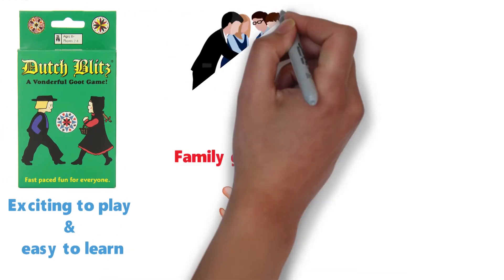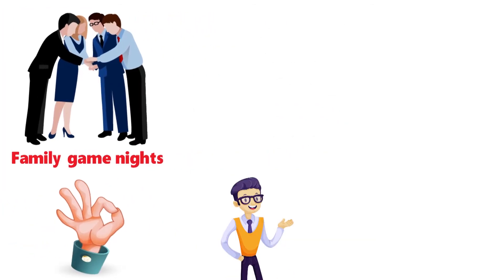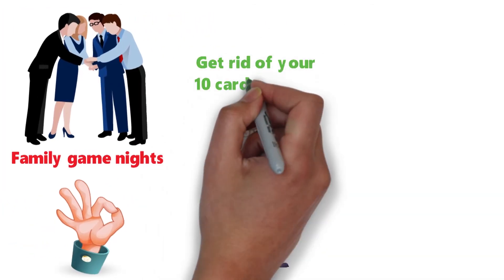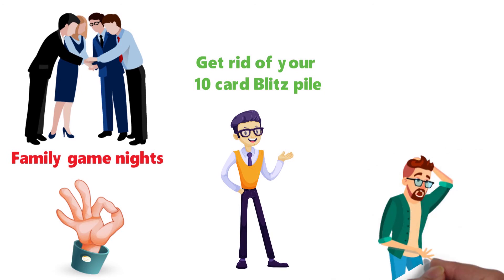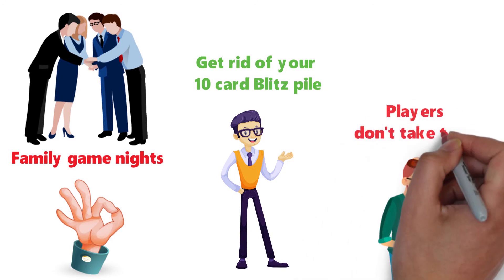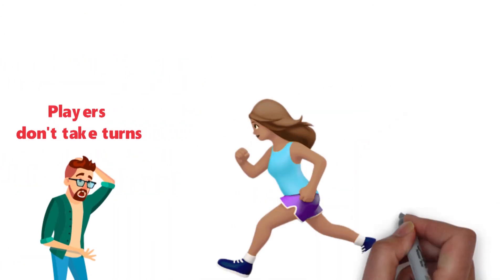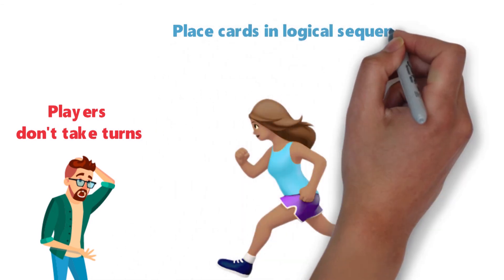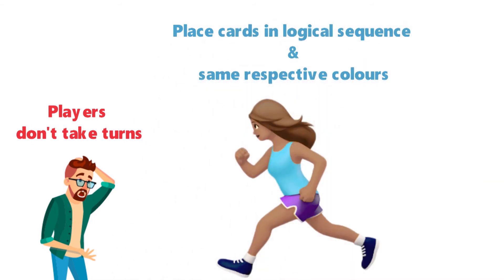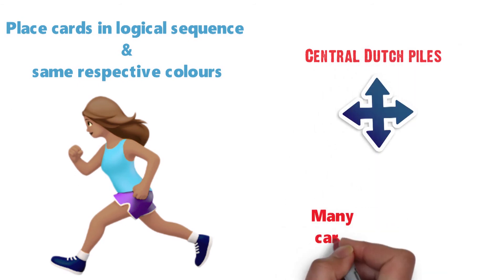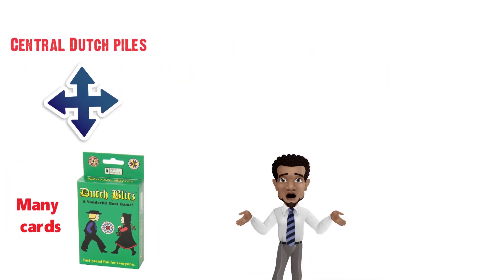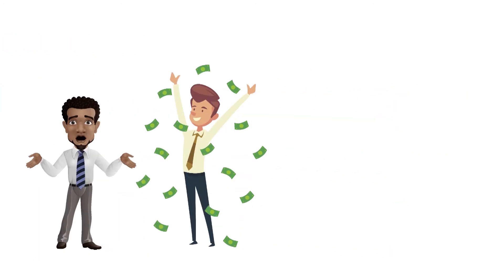The goal is to get rid of your 10-card blitz pile before anybody else. The strategy is harder than it sounds because players don't take turns. You have to be the fastest one if you want to place your cards in a logical sequence and the same respective colors. Add up the central Dutch piles using as many cards from your own blitz pile as possible. When you don't have any more cards to add, you've won.